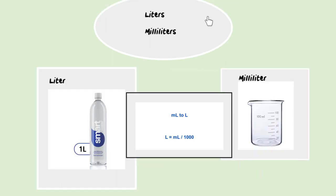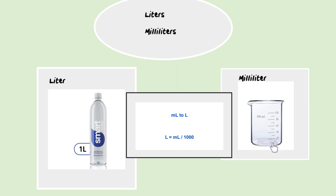For liters and milliliters, I have a visual aid to help us visualize what the units we're working with look like. So for liters it'd be about the size of a smart water bottle, and for milliliters it's about the size of a small cup used to take medicine. To convert milliliters to liters, every liter is equal to 1000 milliliters.